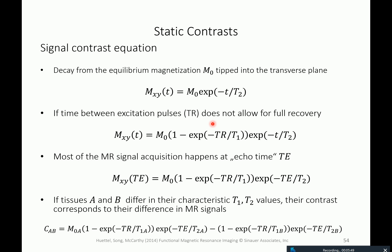This is a function of when you send the excitation pulse. The time between excitation pulses is known as the repetition time, or TR — this is the TR time you see referenced in fMRI papers.